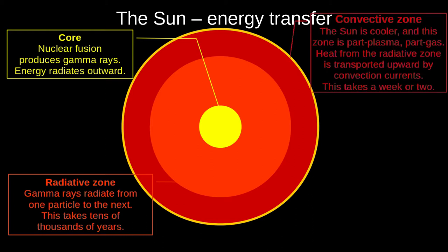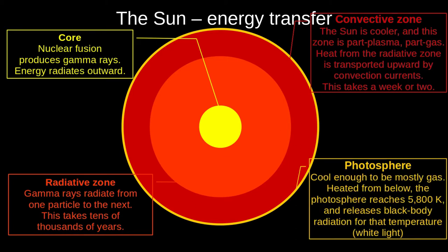The convective zone is cool enough for atoms to form, and as we get further out, there is less plasma and more gas. This absorbs the photons, which heat up the lower parts of the gas and form convection currents. It takes a week or two for these convection currents to transport energy to the photosphere. Finally, the photosphere is heated from below to about 5,800 Kelvin. It releases the black-body spectrum of radiation typical for that temperature, which we see as white light.